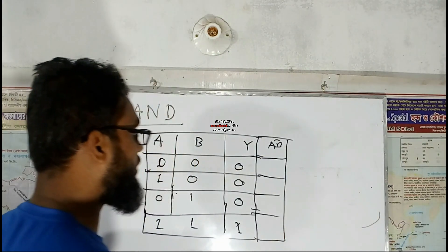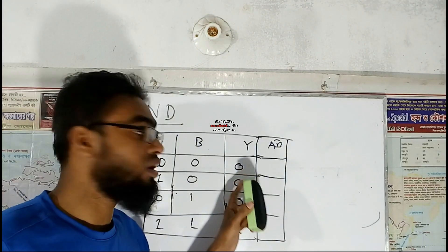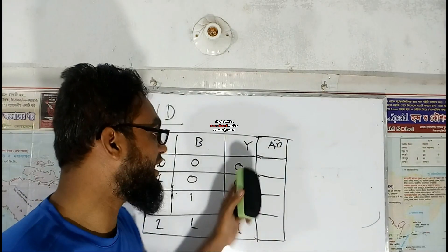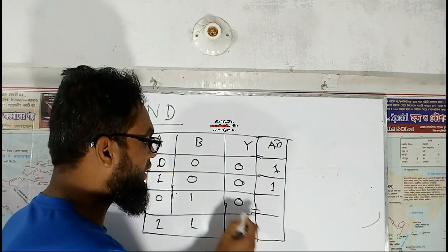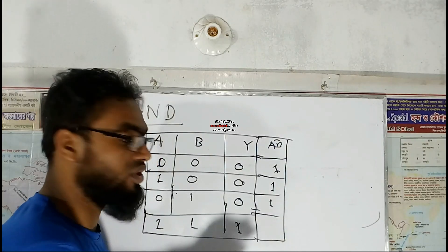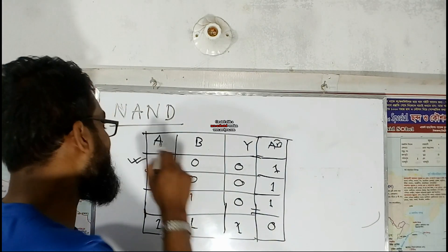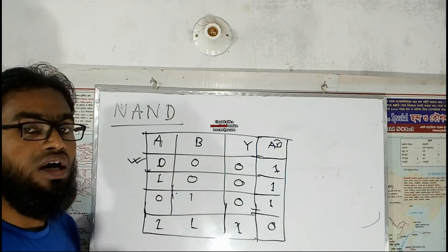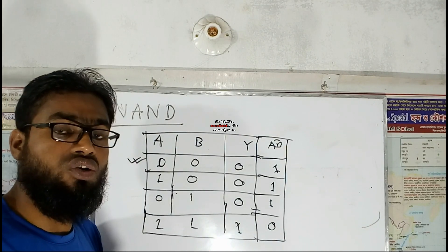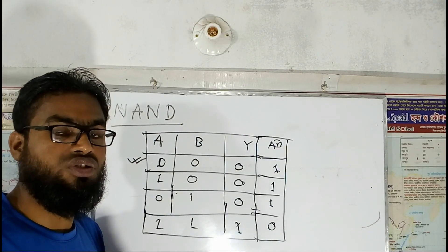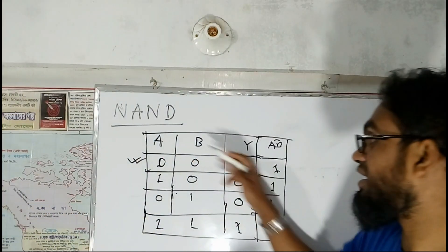If we take the output of the AND gate, the NAND gate output will be complemented by that output. So the output will be 0 when all inputs are at a high level, which means when all inputs are 1, the NAND gate output will be 0.